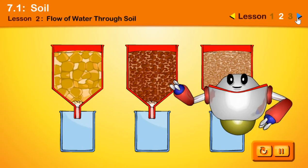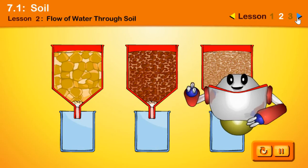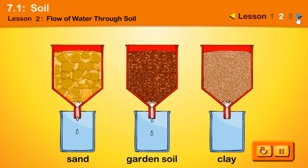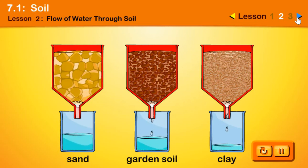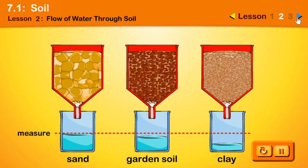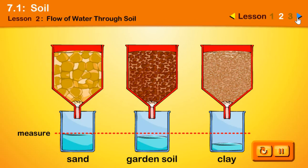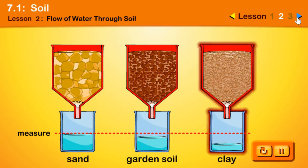Let us find out how well water moves through different soils. Here we have three types of soil particle. Let us pour the same amount of water into the three jars. Let us measure the amount of water in each jar. The jar with sand has the most water — water moves easily through the sand. The jar with clay has the least water — water moves slowest through clay.